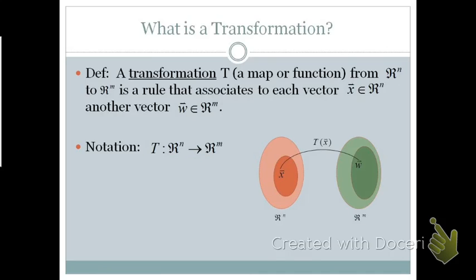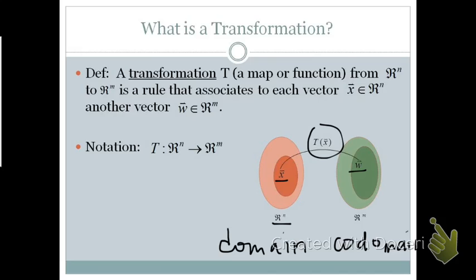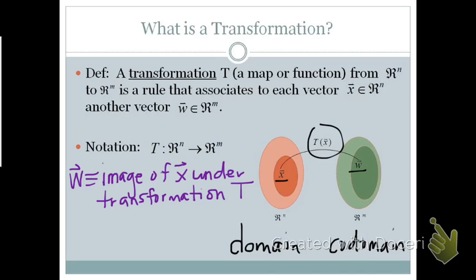We have a vector x in Rn, which we call our domain, which is mapped by some transformation — so we say T of x is mapped into Rm to a new vector w. Our Rm we call our co-domain. We say that w is the image of the vector x under the transformation T. Our range is the set of all images from a given domain.